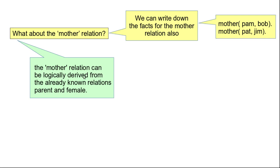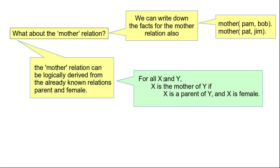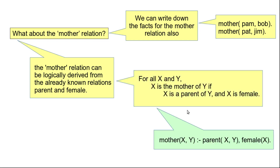The mother relation can be logically derived from already-known relations. If we know the parent relation and if we know the gender relation, we can automatically find out the mother information. So it is not necessary to add new facts to our program. Another way of saying this is: for all X and Y, X is a mother of Y if X is a parent of Y and X is female. So X can be a mother of Y only if X is a parent of Y and X is female.